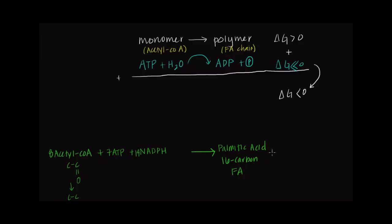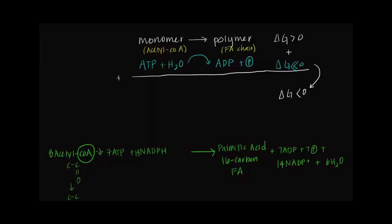The products and byproducts of the overall reaction include palmitic acid, 7 ADP, 7 free phosphate groups, 14 NADP+ (since we've removed the electrons, oxidizing NADPH), 6 water molecules lost during the reaction, and 8 coenzyme A molecules released as the CoA groups are removed from acetyl-CoA in the process of making carbon-carbon bonds.